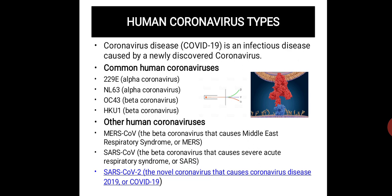There are seven known human coronavirus types, now including the novel coronavirus. COVID-19 is an infectious disease caused by a newly discovered coronavirus. Common types include alpha, beta, and gamma. Beta-type human coronaviruses include SARS-CoV, MERS-CoV, and SARS-CoV-2 (novel coronavirus). MERS means Middle East Respiratory Syndrome; SARS is Severe Acute Respiratory Syndrome. SARS-CoV-2 causes coronavirus disease 2019, or COVID-19.